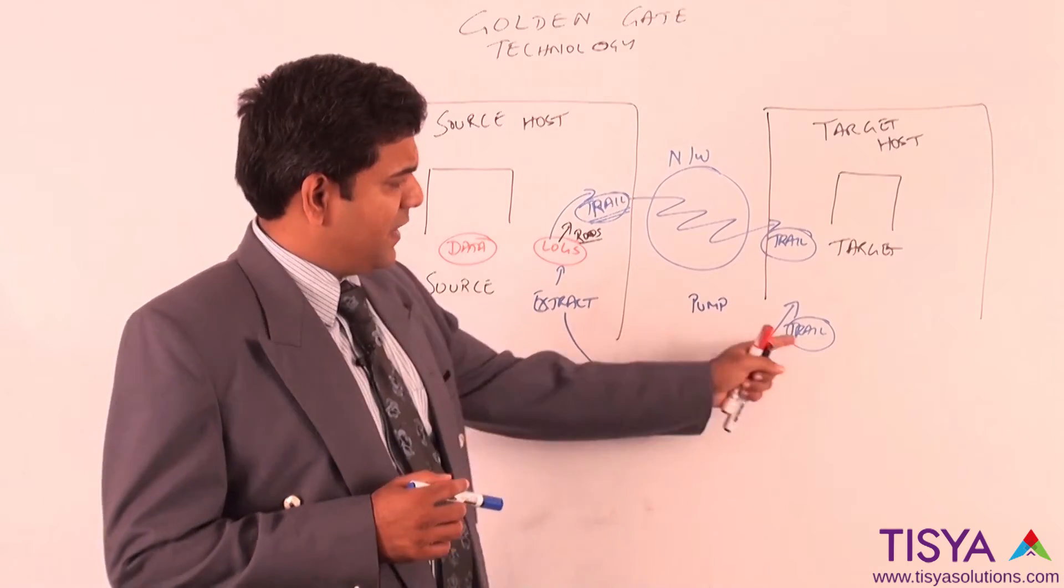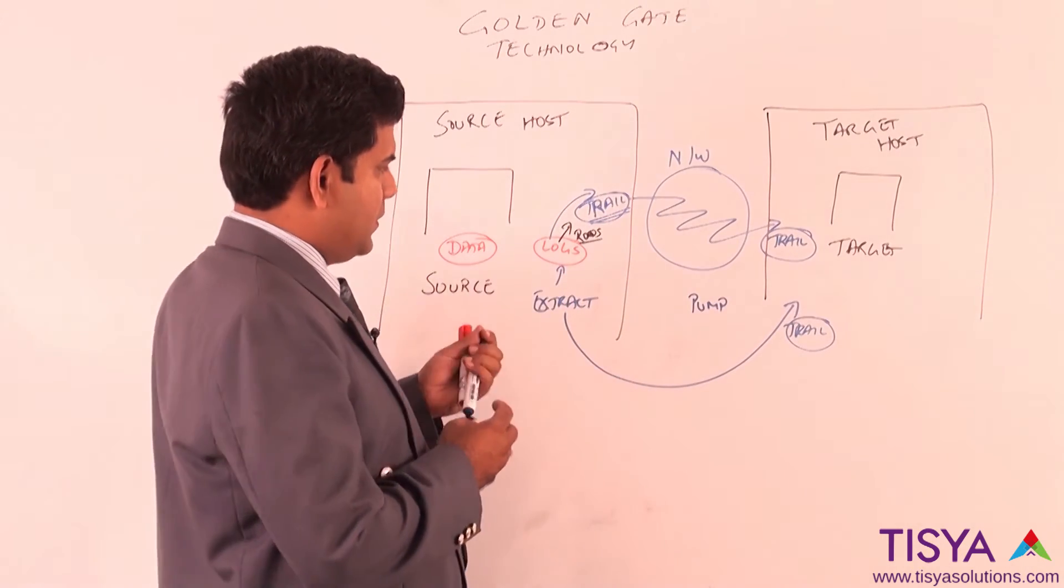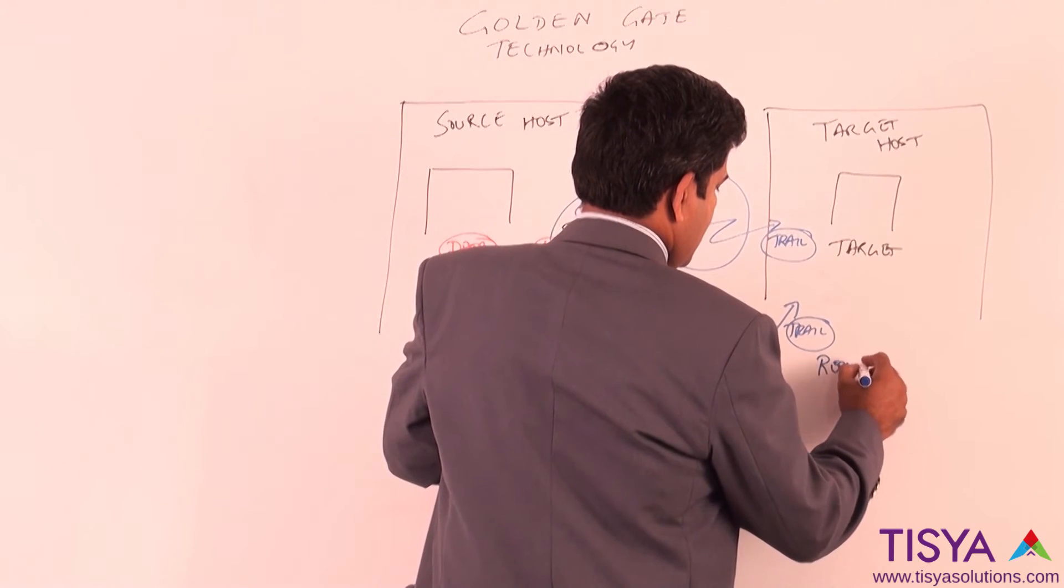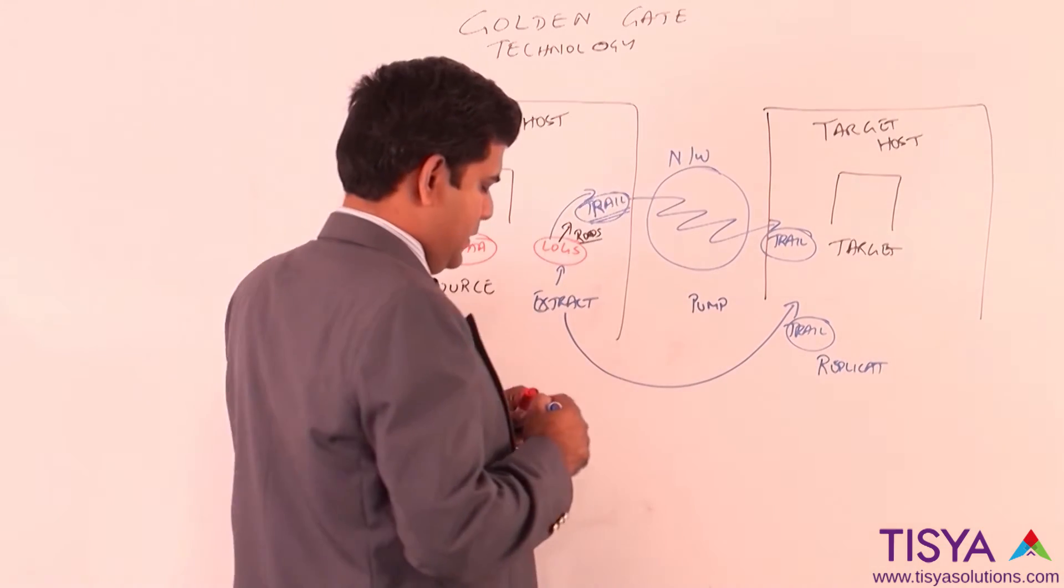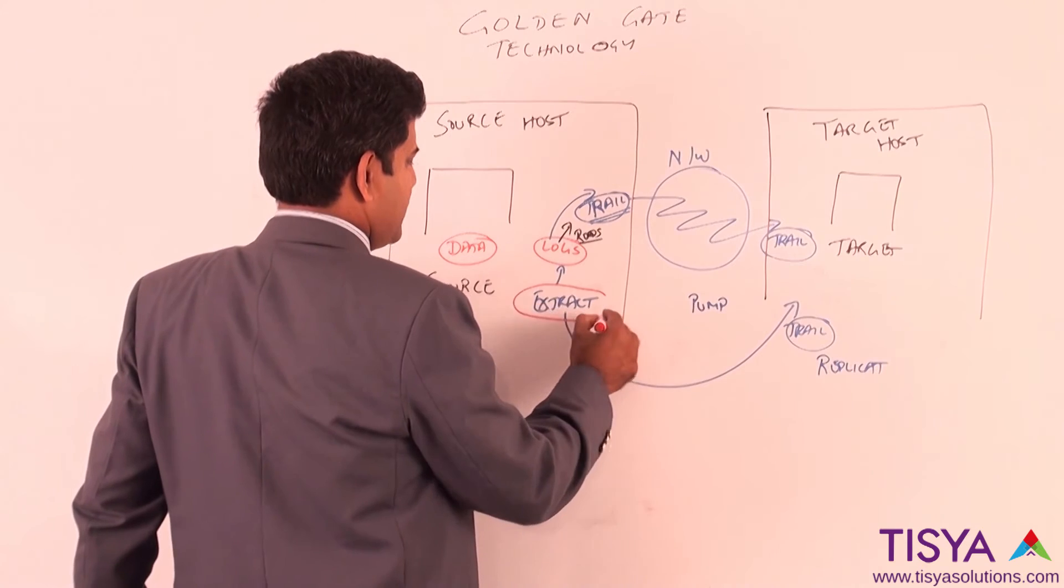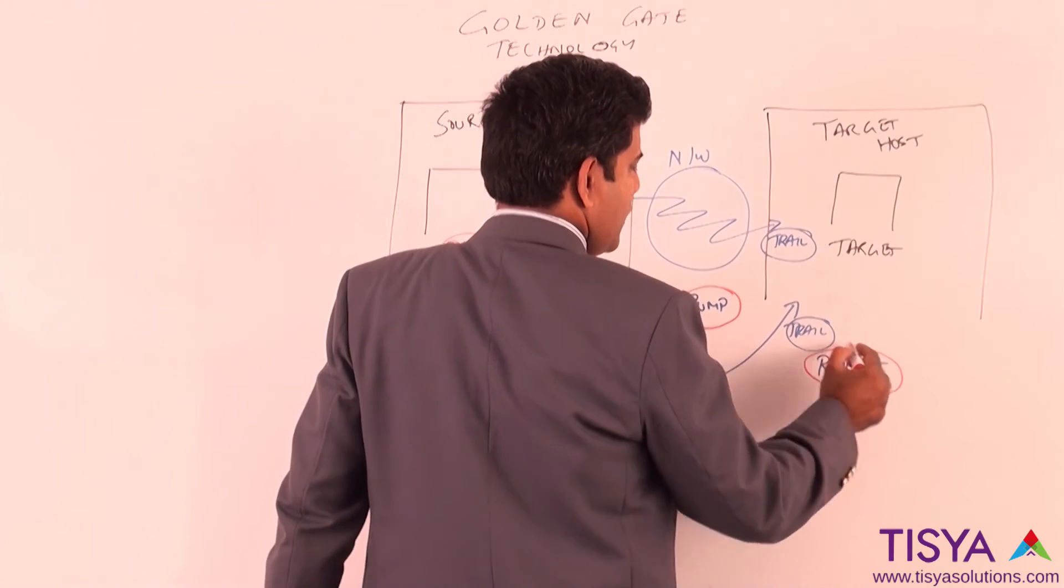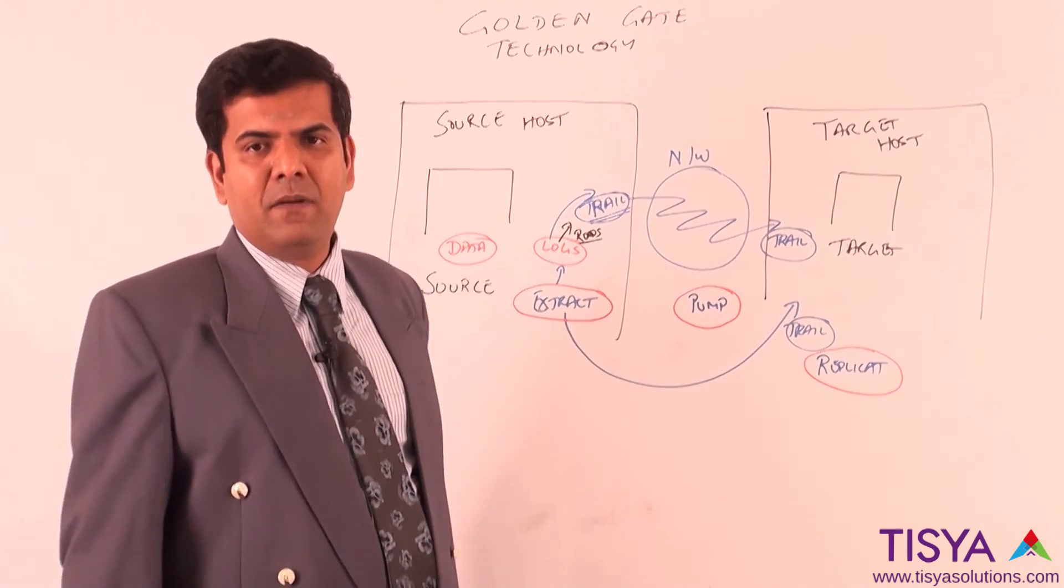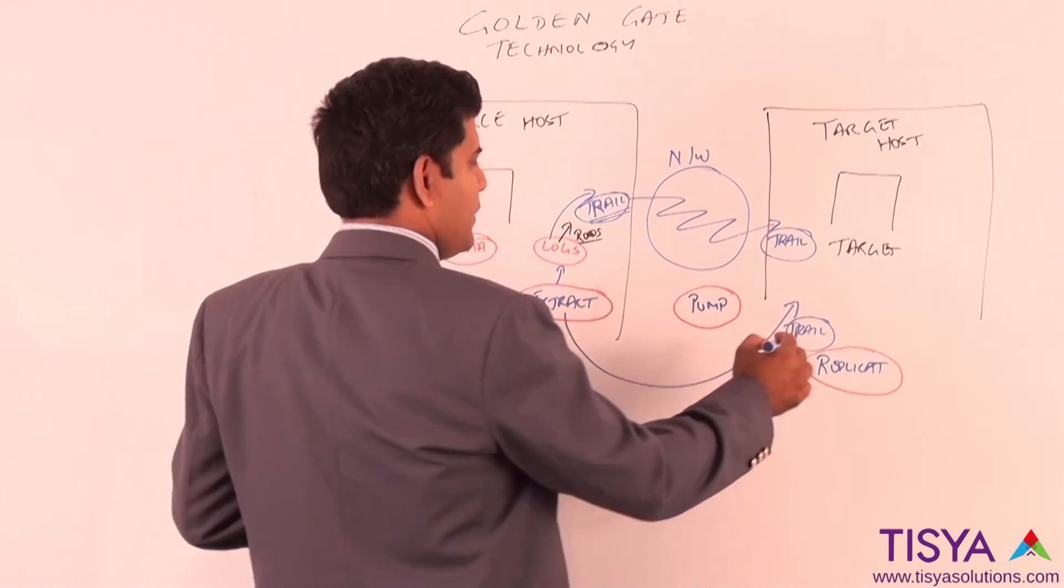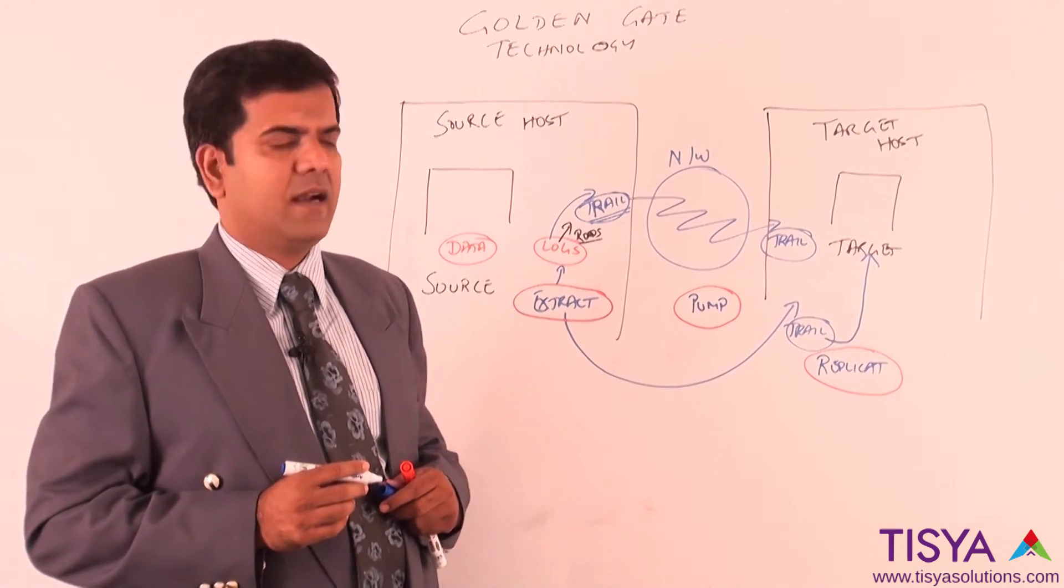Once we have received trails on the target, what we will do now is use another process called replicate. This is the third process. We first looked at an extract process, then looked at a pump process and now we are talking about a replicate process. The task of a replicate process is to read from the trail and populate the data into the target.